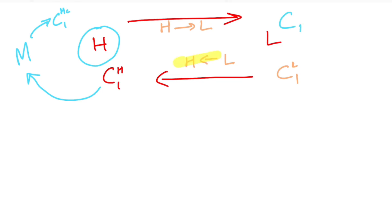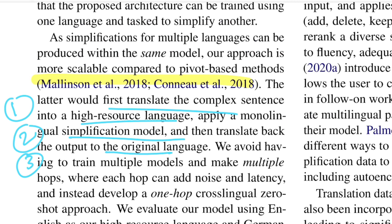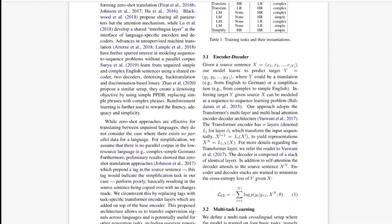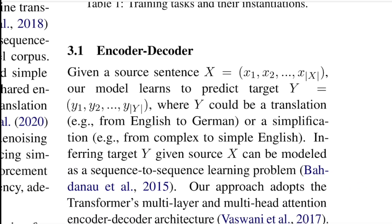Notice that this pipeline requires three models — one for translation, one for back-translation, and one for simplification — and the sentence passes through all three, where each may add its own noise. This introduces latency and compounding errors. The work proposed in this paper is a one-hop version of the same task using a sequence-to-sequence encoder-decoder architecture trained in a multitask setting.